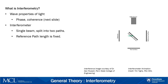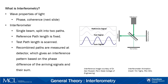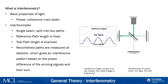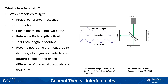Here we see a single beam emitted from the source, split into two paths by a beam splitter — in our case, a half-silvered mirror. The reference path length is fixed, however the test path length is variable. The test path length is scanned with both the test path and reference path reflecting back to the beam splitter. The recombined paths are then measured at the detector, resulting in an interference pattern for the sum signal based on the phase difference between the arriving beams.